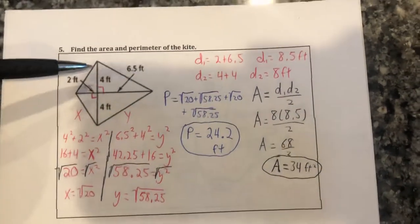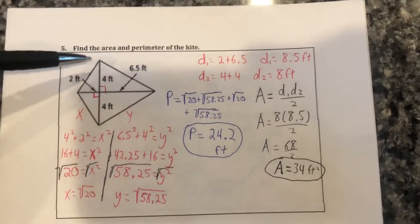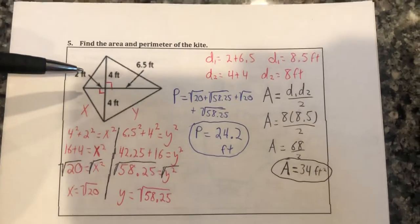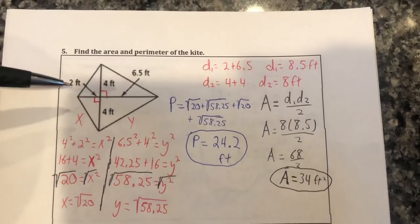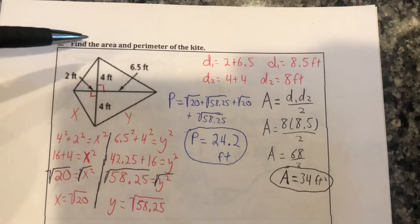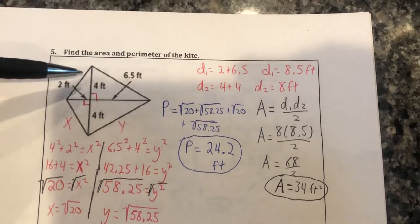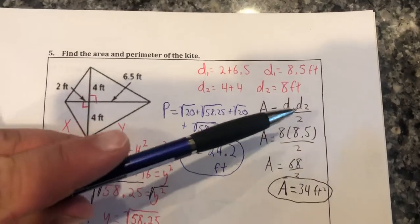All right, looking at the kite example here we're trying to find the area and the perimeter of a kite. Now if we're talking area, kites have the exact same formula as a rhombus for its area: it's diagonal 1 times diagonal 2 divided by 2.